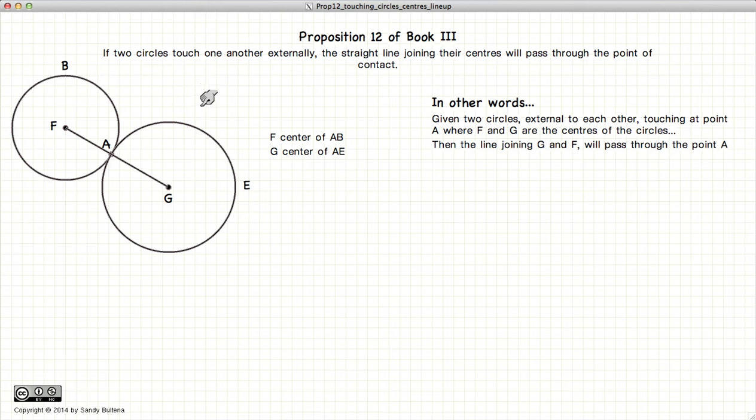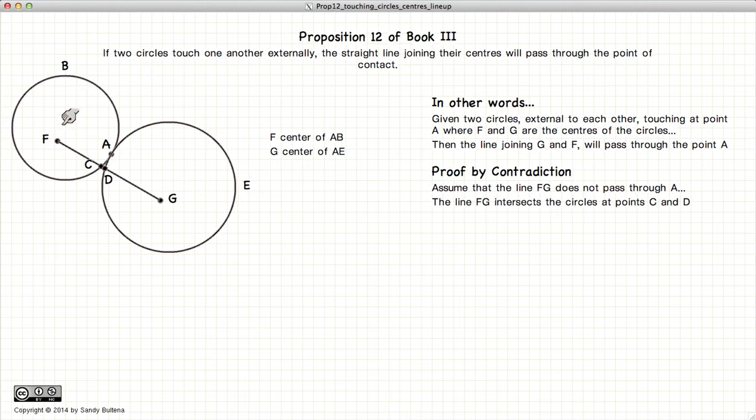Now we're going to demonstrate this by contradiction. In other words, we're going to assume that F and G, the centers of the circles, are not exactly where they're shown in this diagram, and that the line FG intersects the two circles at points C and D.